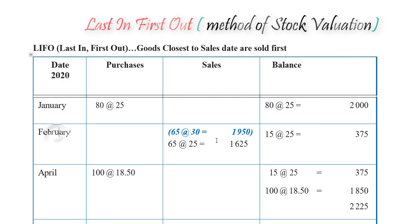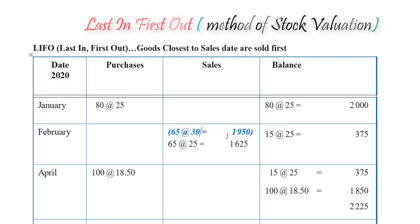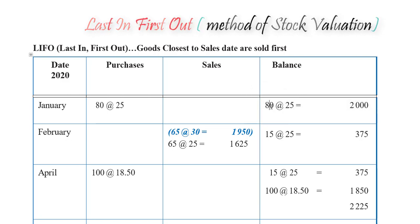Next, in February, we sold 65 units at $30. The selling price is $30, so let's find out the cost price at which we'd sell those goods. With 65 units, the only amount of goods we have on hand is 80 units, so we have to sell from that — it's the first and last set of goods we have, just one set. So we're going to take the 65 from the 80, and the balance remaining would be 15 at $25. Remember, it's always at the cost price we're representing the balance.